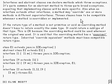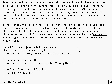If the return type of a method is not primitive or void, an overriding method doesn't have to return exactly the same type. It could return a subtype of that type, and this is going to be OK because the overriding method could be used wherever the original was. I've been careful to use the word 'subtype' here because the method could return an interface type, which is perfectly valid. The overriding method is said to have a covariant return type.